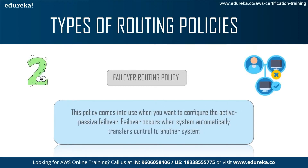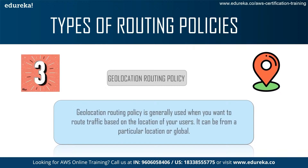Next is the Failover Routing Policy, which comes into use when you want to configure active-passive failover. Failover occurs when your system automatically transfers control to another system. Then we have the Geolocation Routing Policy, generally used when you want to route traffic based on the location of your users — it can be from a particular location or from a global location.